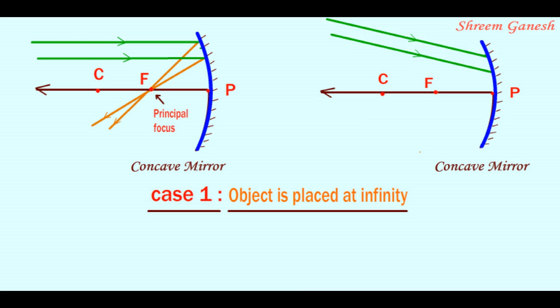And if they are not parallel to the principal axis, they will intersect at a point either below or above or left hand side or right hand side to the principal focus.